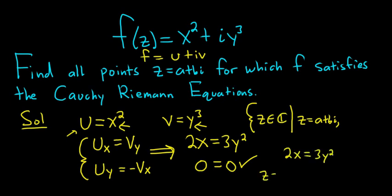So if you think of a complex number as x plus iy, you can also think of it as a plus bi. So in this case, x is a, so this is 2a equals 3b squared, because y is b. So you can simply write this as 2a equals 3b squared.